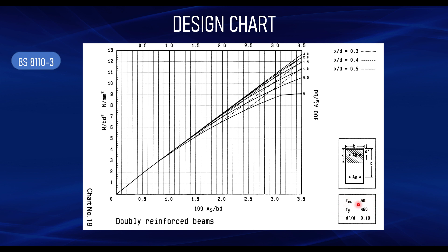For a doubly reinforced section, the chart includes the design parameters: the compressive strength of concrete fcu, the fy, and you also need to determine your d' over d. These parameters determine the kind of chart to use. This is chart 18. We have a series of charts depending on fcu and fy. Another thing to note is what is called x over d, which depends on the redistribution.